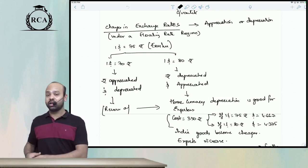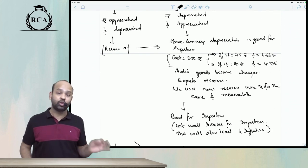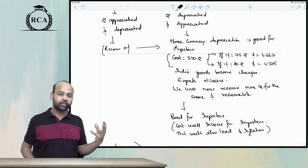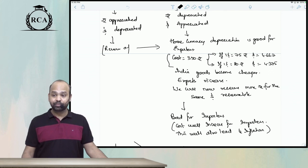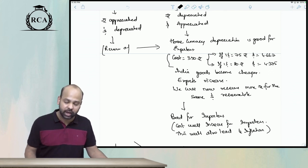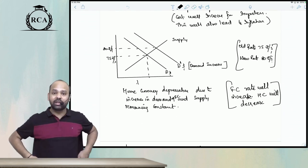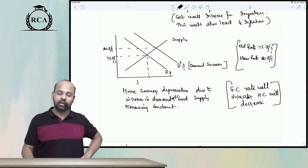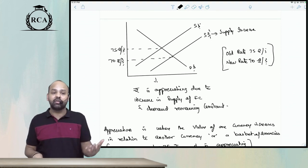If your home currency is appreciating, it means the foreign currency is depreciating, and vice versa. Home currency depreciation is beneficial to exporters but bad for importers. It is beneficial for exporters because the price of Indian goods relatively decreases in the international market, so demand for exports increases, and exporters receive a higher amount of rupees for the same amount of goods. Importers have to pay a higher amount for importing goods, which is why depreciation is bad for importers. We also saw examples of home currency depreciation where demand for foreign currency increased, raising the price of foreign currency and decreasing the price of home currency, and vice versa for appreciation.